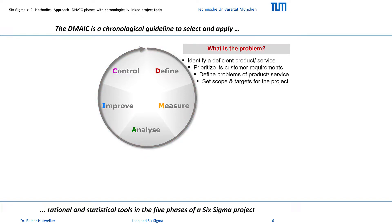What is the problem? First, a product or service that deviates from the requirements must be identified as a potential for improvement. Customer requirements are then prioritized as a basis for defining the primary problems of the product or service.